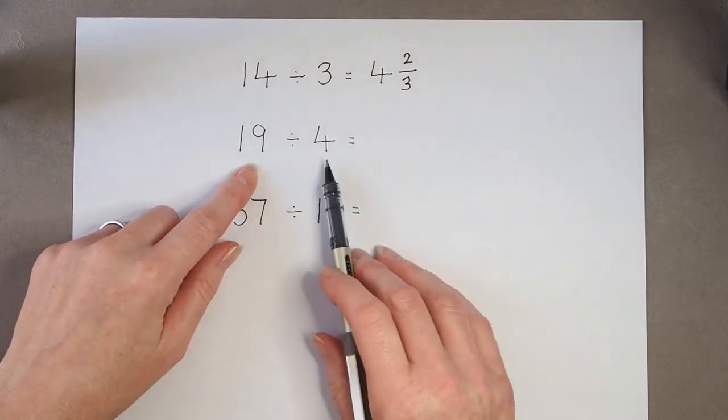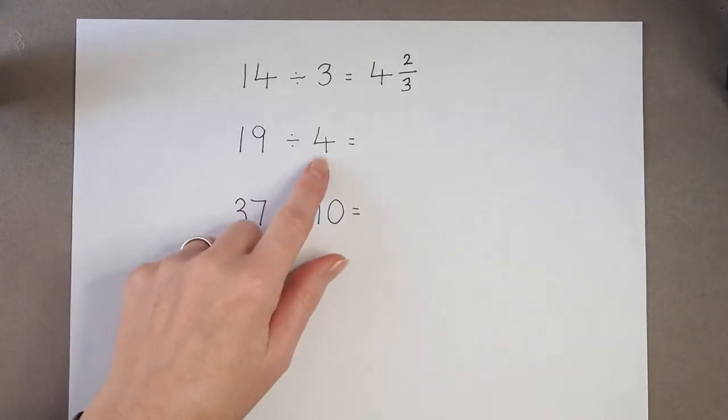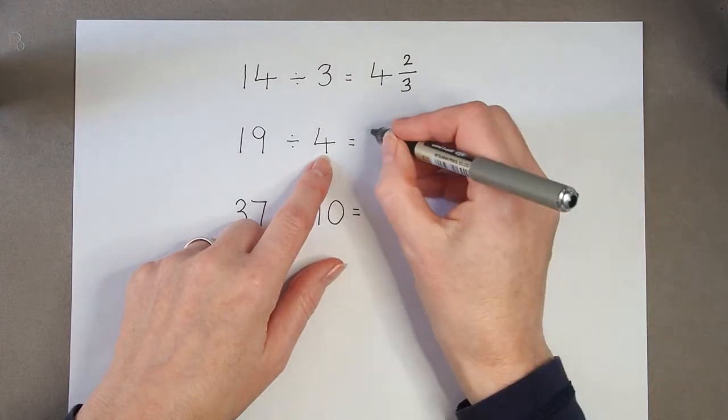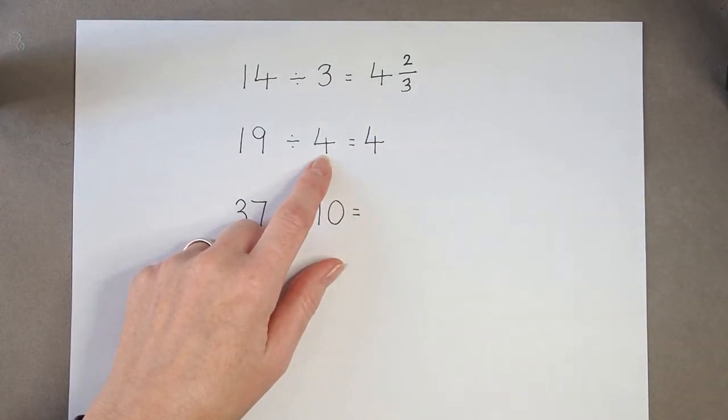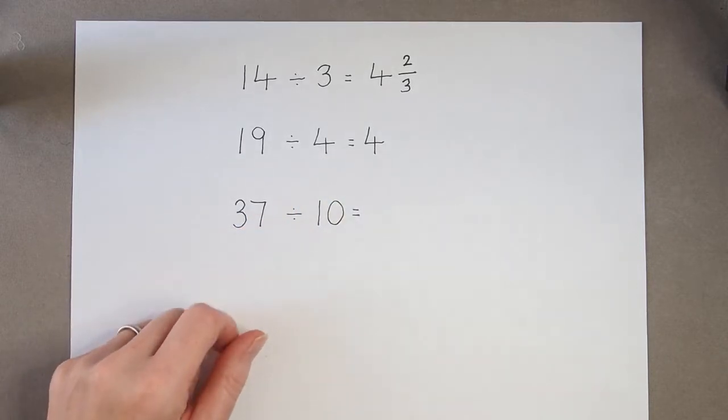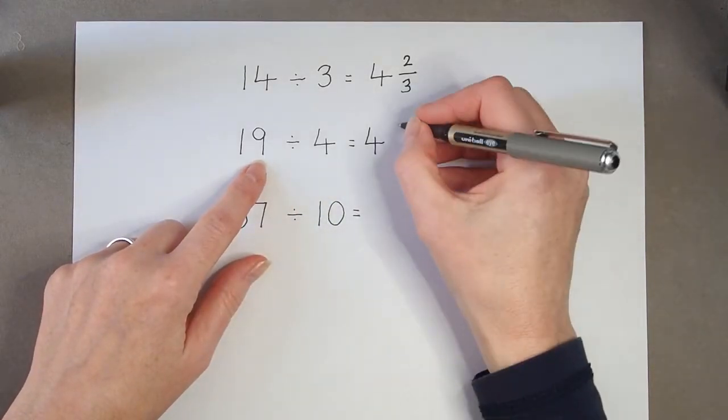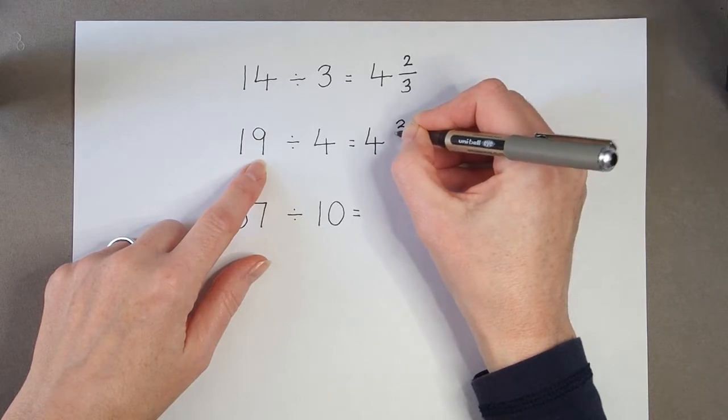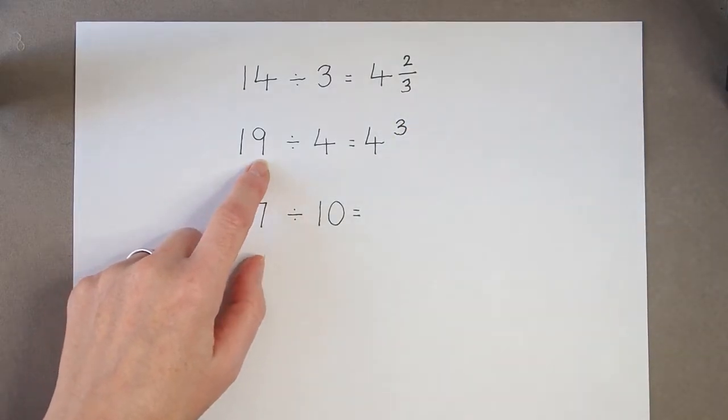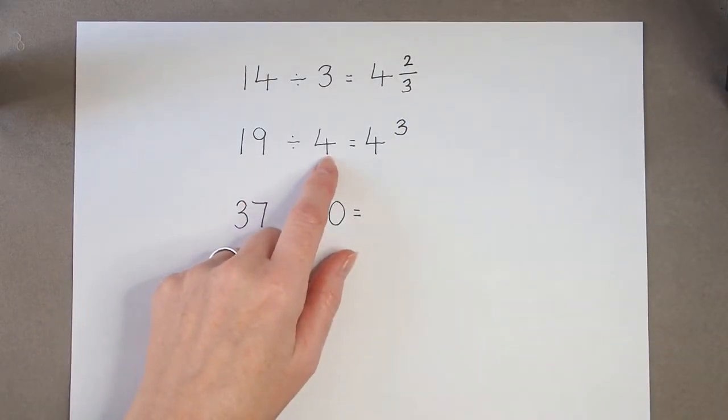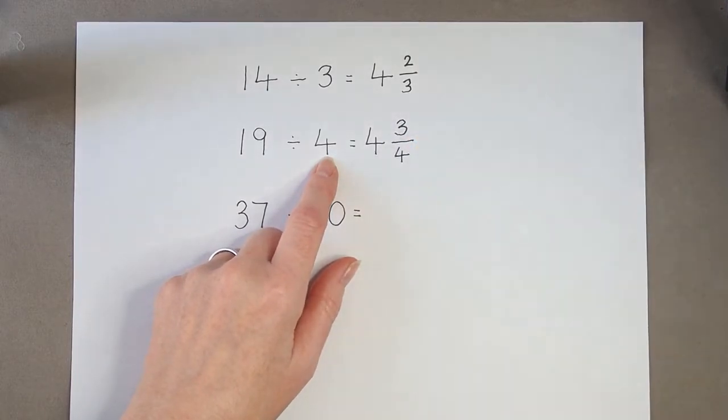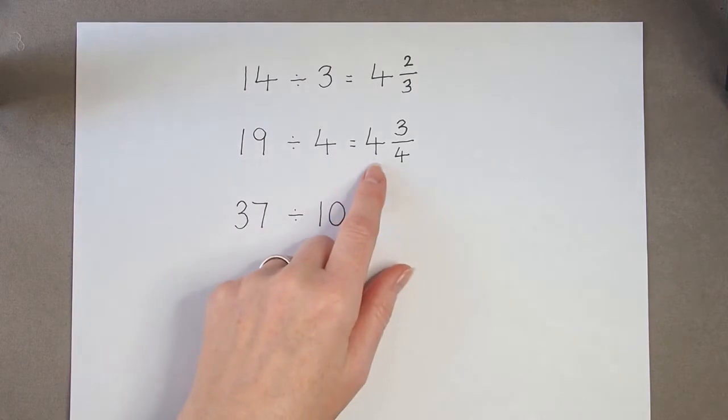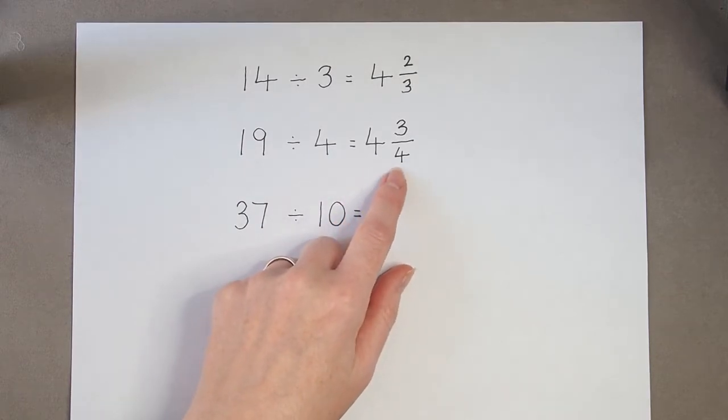19 divided by 4. 4 times 4 would be 16. So 4 lots of 4 are 16, which leaves me with a remainder of 3. So I've got 3 left out of the 4 that I need to make another group. So my answer is 4 and 3 quarters.